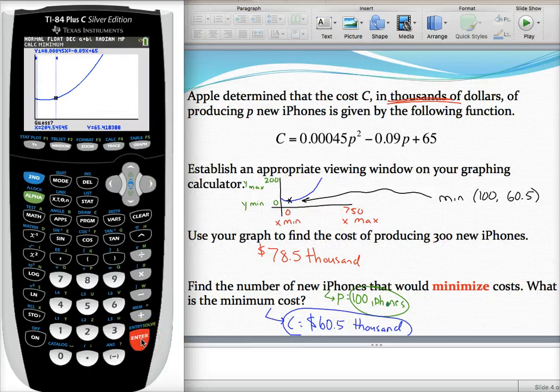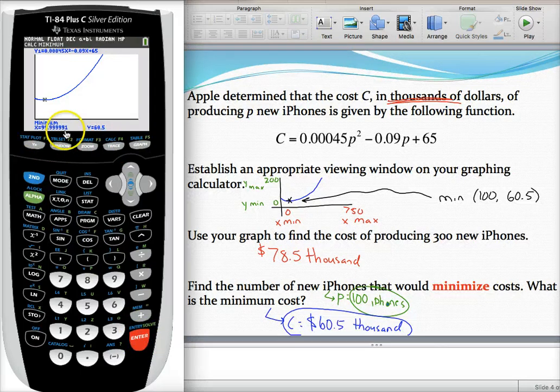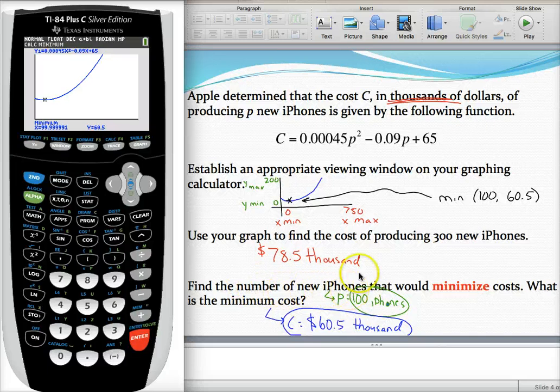For guess, just hit enter a third time. It will find your min and max value. Sometimes you may need to round some things off. Let's interpret what that coordinate means and make sure we answer the question.